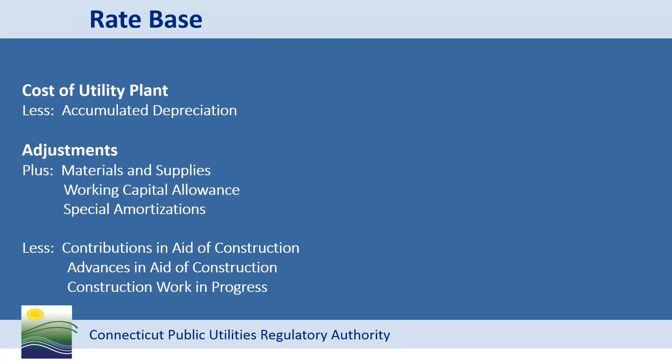Rate base is the cost of utility plant. The cost of utility plant is the original cost of the plant, including the labor costs of constructing or installing it. It is reduced by accumulated depreciation, which is the running total of an asset's depreciation expense over time.